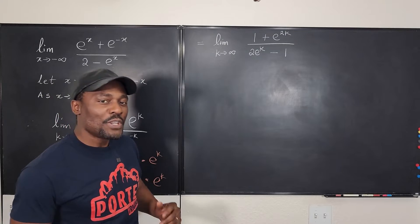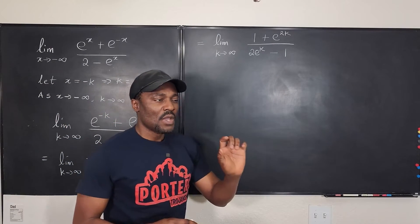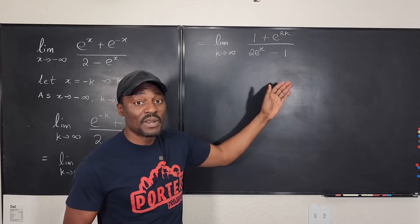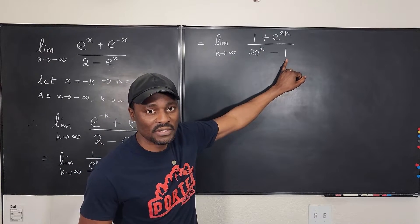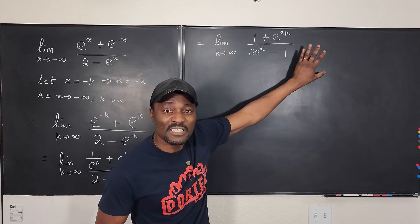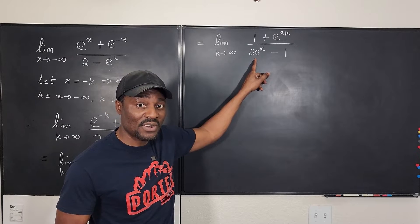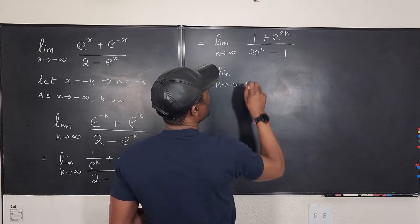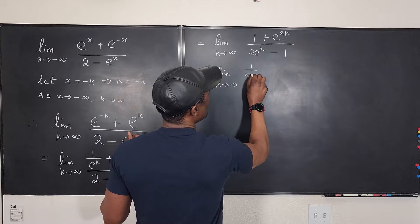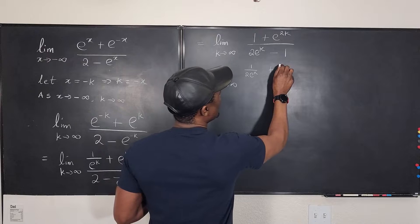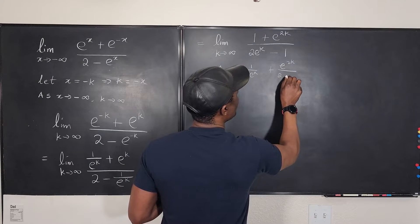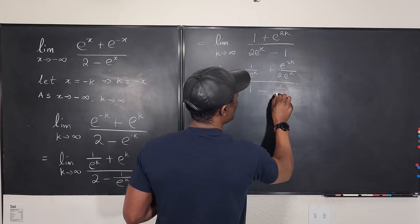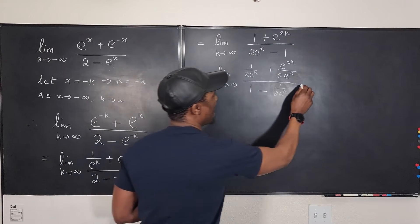So with this you want to take the limit. You look at the denominator and ask: what's in the denominator such that if I keep increasing the value of k it's going to be the biggest value? Definitely it's 2e to the k, because the constant stays the same. Now what you're going to do is divide everything in this expression by that term, because it's the biggest term in the denominator. So this is going to be the limit as k goes to infinity of 1 over 2e to the k, plus e to the 2k over 2e to the k, divided by 1 minus 1 over 2e to the k.